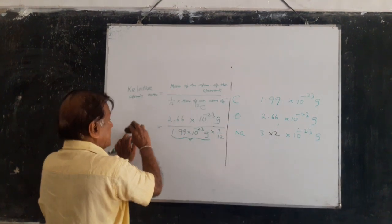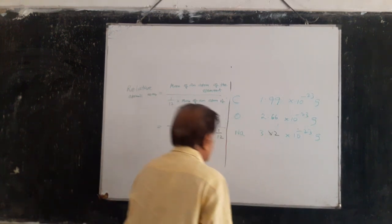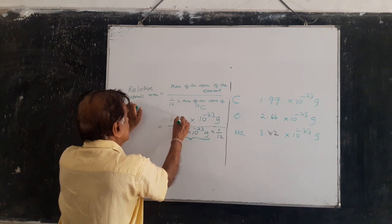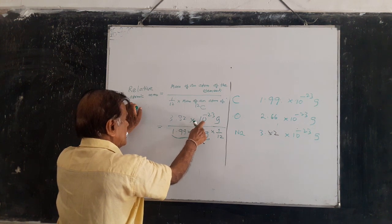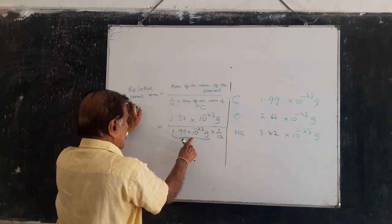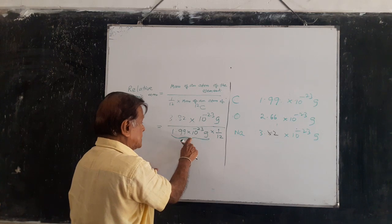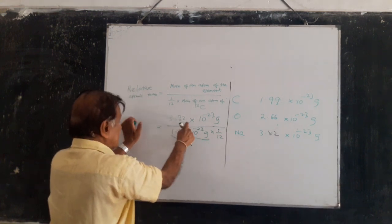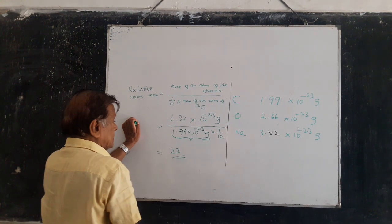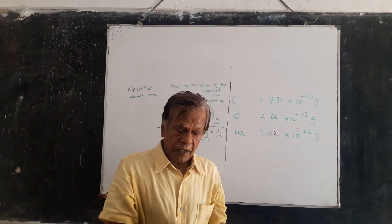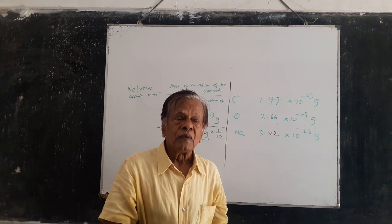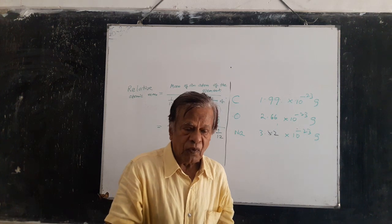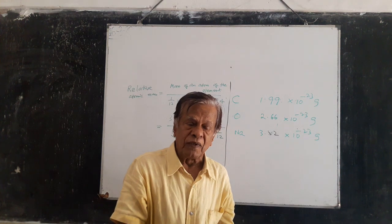Now we will calculate the relative atomic mass of sodium. The mass of an atom of sodium is 3.82 × 10⁻²³ grams. Divide this by the atomic mass unit, which is 1/12 of the mass of the C12 atom. When we divide, we get 23 as the answer — the relative atomic mass of sodium is 23. If you calculate for sulfur, you get 32. For magnesium it is 24. These are relative atomic masses of these elements.